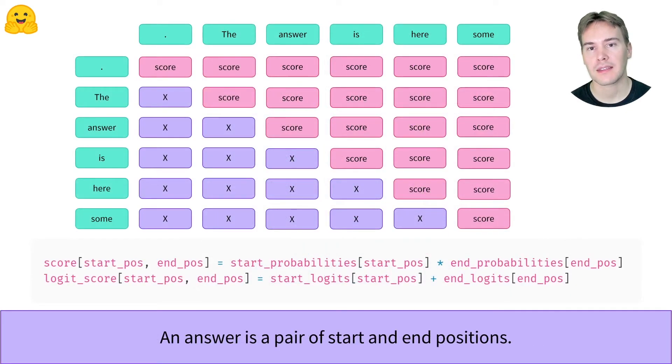We could just take the best index for the start and end logits and be done, but if our model predicts something impossible, like tokens in the question, we'll look at more of the logits. Note that in the question answering pipeline, we attributed scores to each answer based on the probabilities, which we did not compute here. In terms of logits, the multiplication we had in the scores becomes an addition.